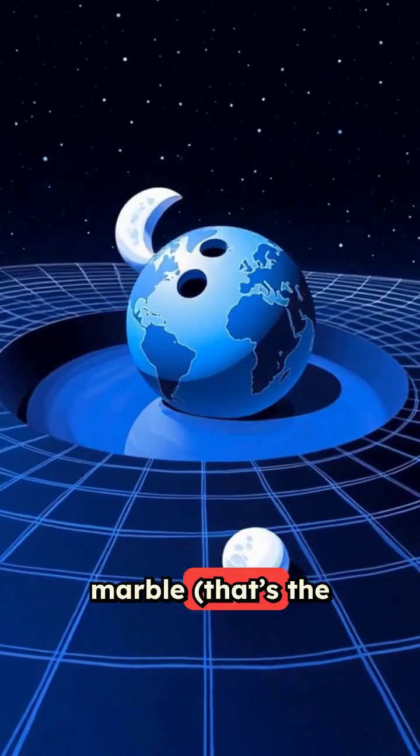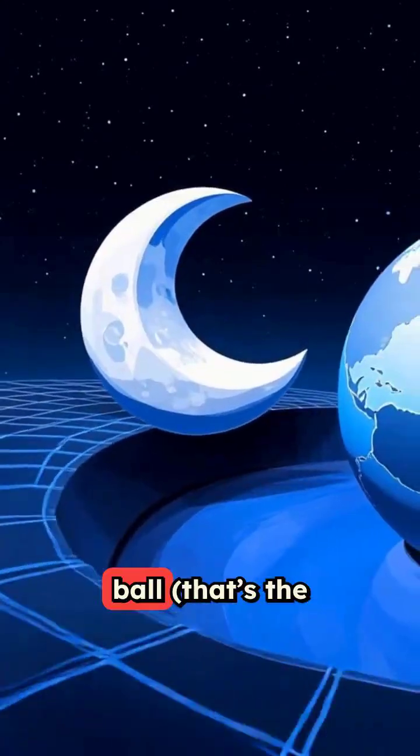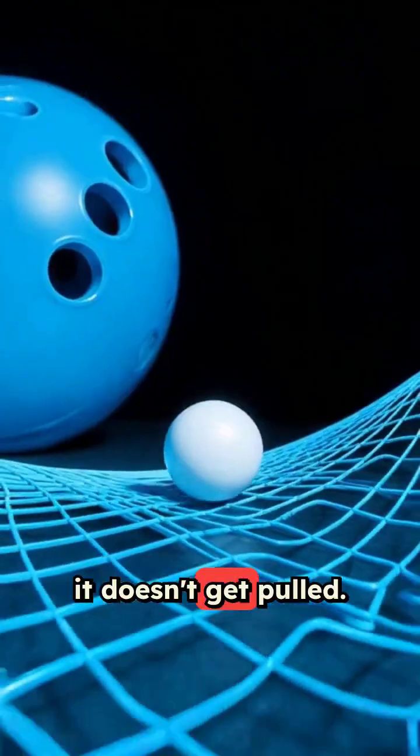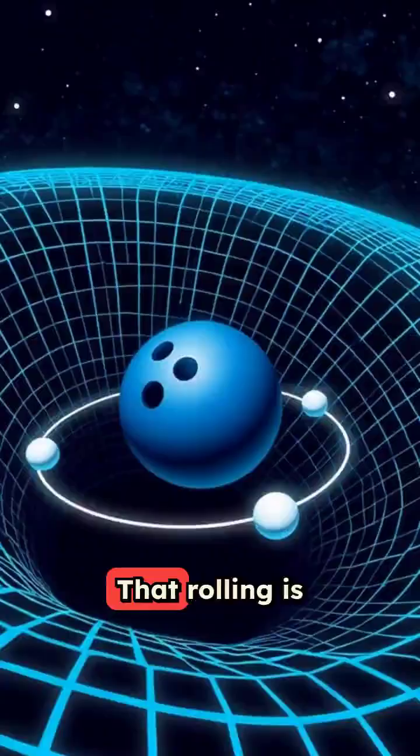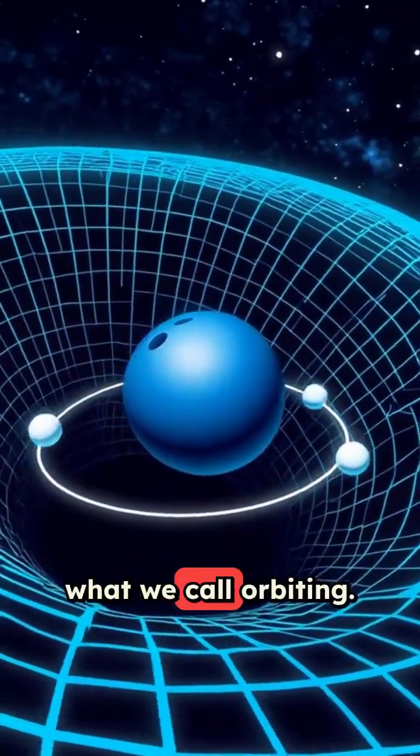When you roll a marble, that's the moon, near the bowling ball, that's the Earth, it doesn't get pulled. It just rolls down the curve the bowling ball made. That rolling is what we call orbiting.